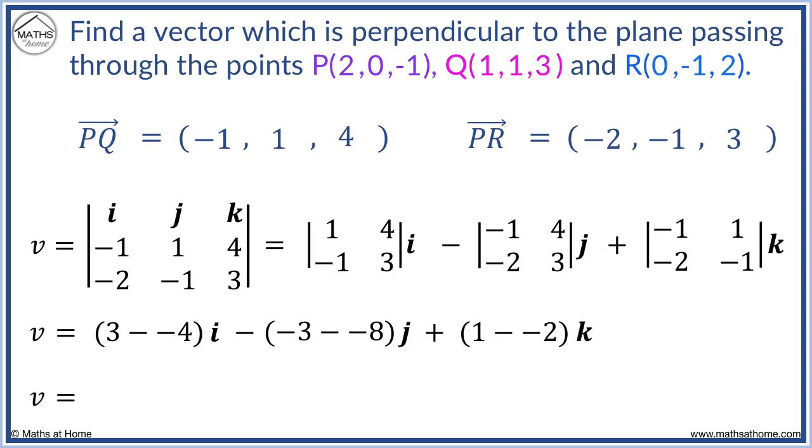Evaluating, we get 7i minus 5j plus 3k. We can write this in the vector form like so. This is the vector perpendicular to the plane.